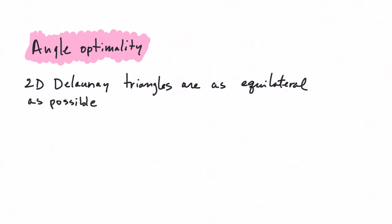Almost all of the properties of the 2D Delaunay triangulation can be generalized to 3D, and that in a straightforward way. The most important property to be aware of is the angle optimality.